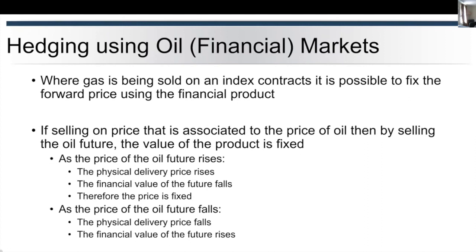As the price of the oil future rises, the physical delivery price would rise, the financial value of the future falls, and therefore you end up with a fixed price. And as the price of the oil future falls, the physical delivery price falls but the financial value of the future rises, so it acts as a compensation on that market.